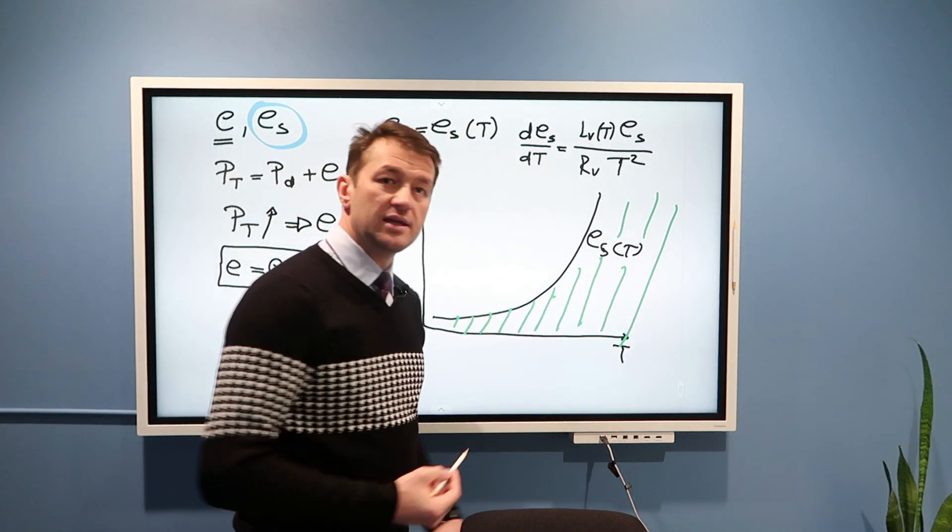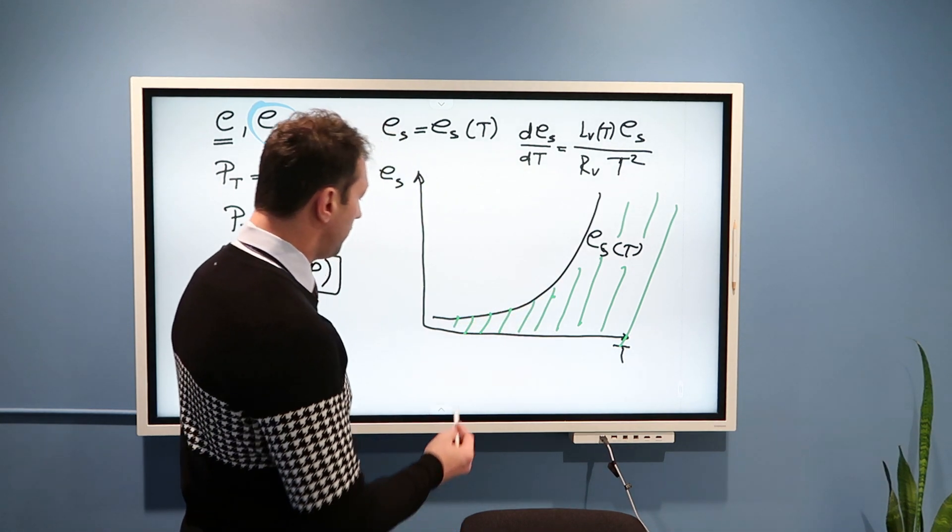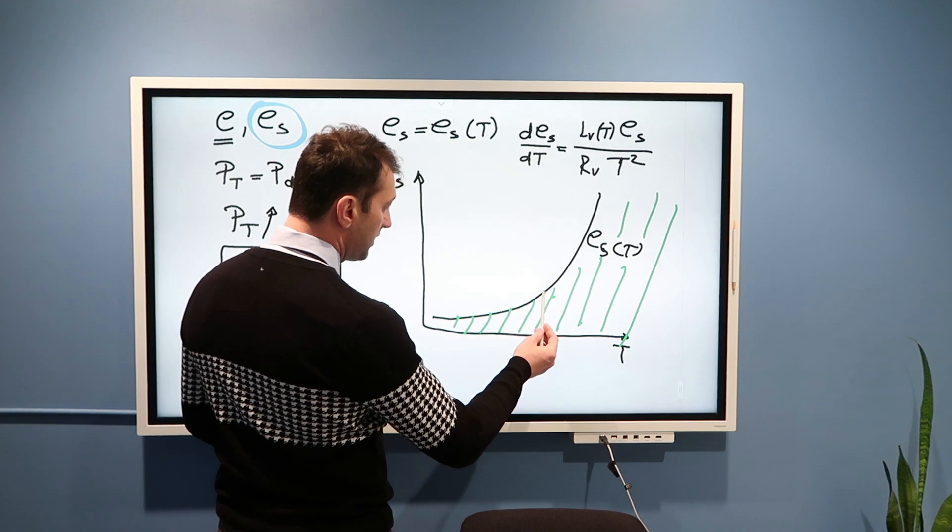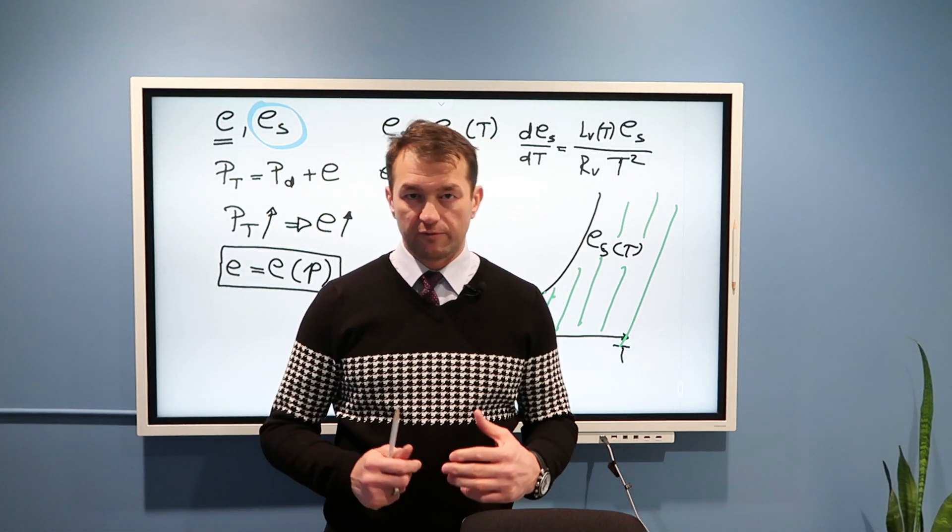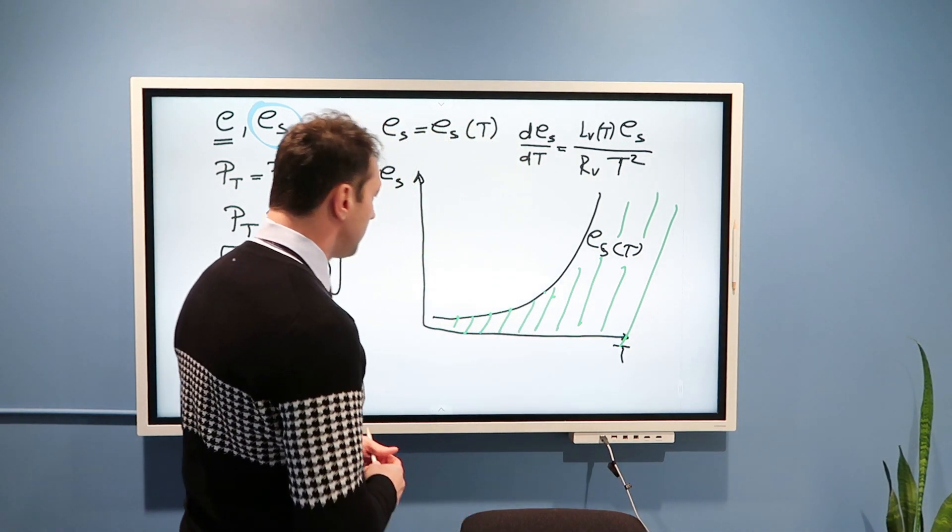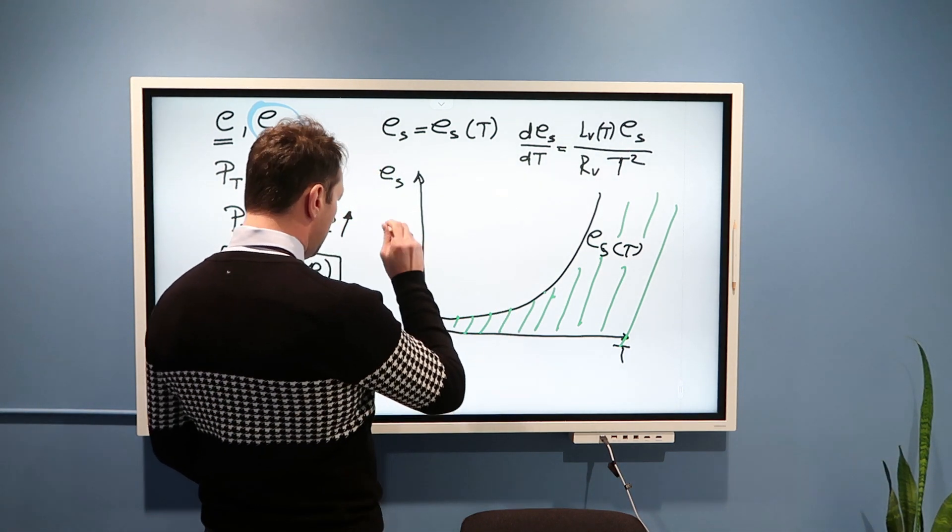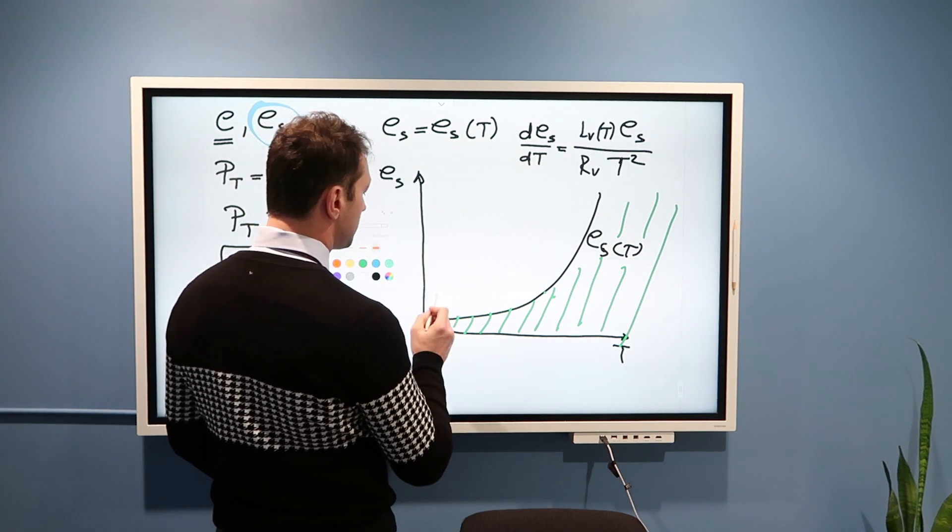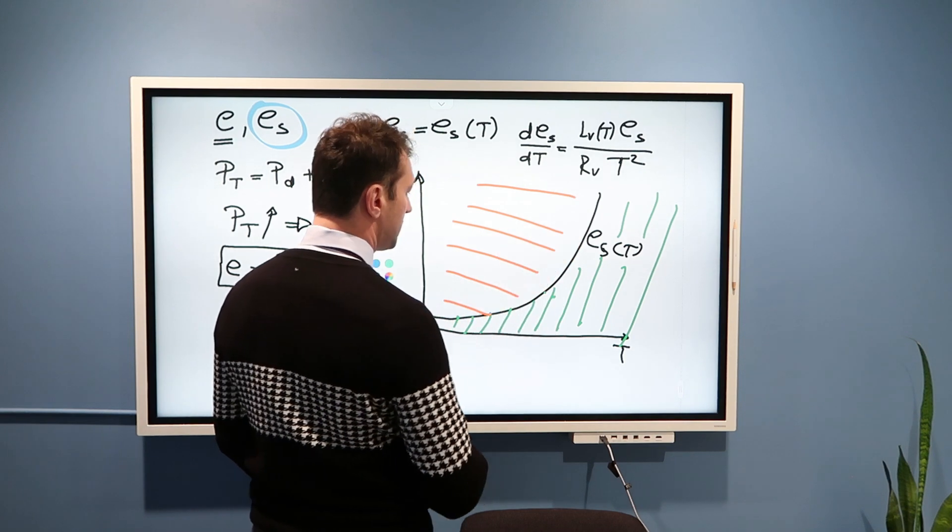Black line is saturation. When we are sitting on the for a given temperature, if vapor pressure is equal to anything on the black line, that means parcel of air is saturated with water vapor. Is it possible to be above black line? The answer is yes, actually. And that is called supersaturation. This region over here is supersaturation.